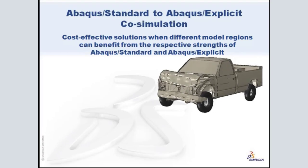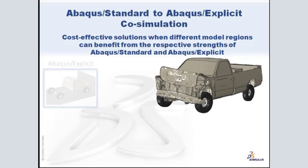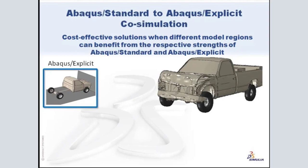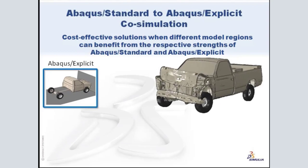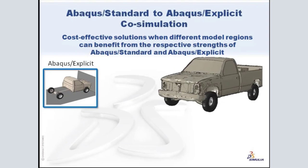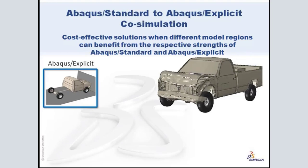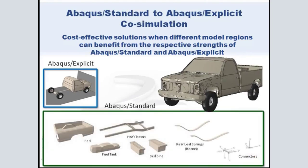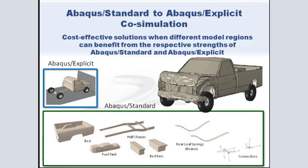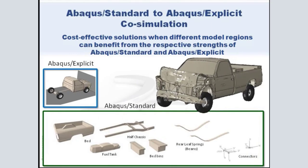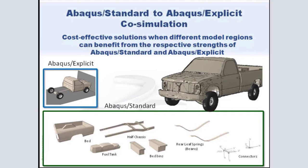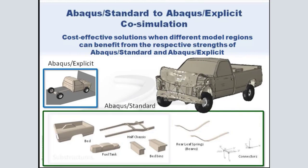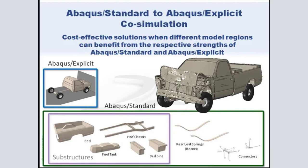In this truck crash simulation, the high-speed dynamic response and complex contact conditions that occur in the truck's front end and tires must be modeled with Abacus Explicit. However, many of the components in the rear of the truck only experience small strains during the impact.